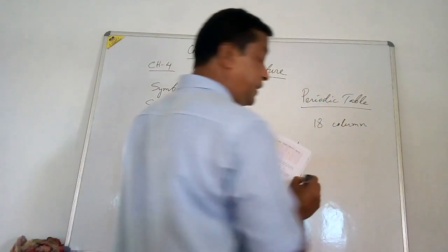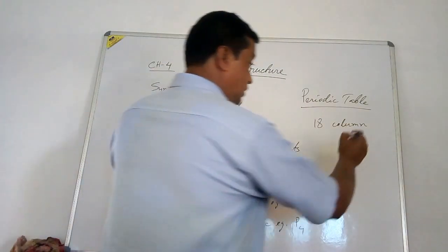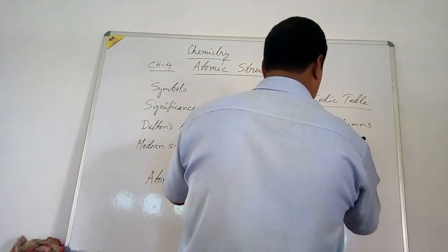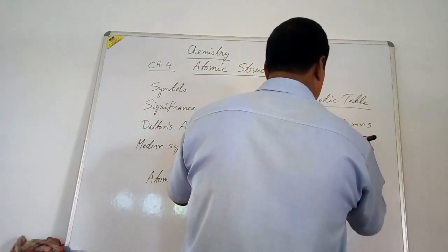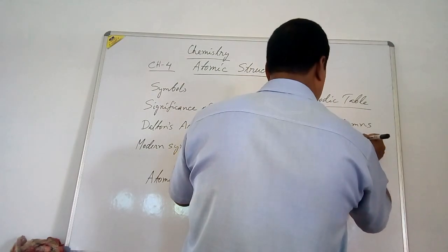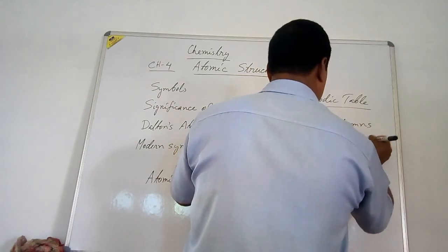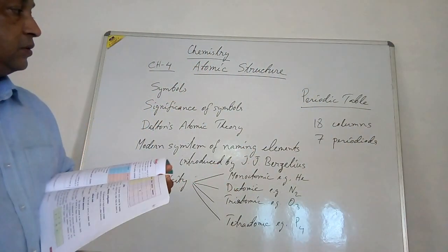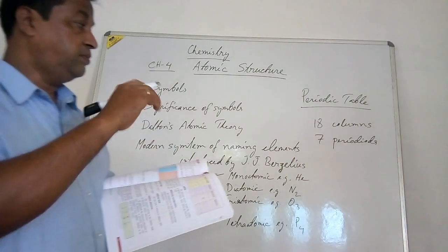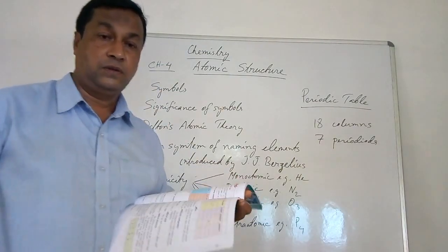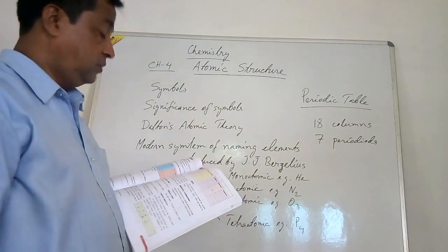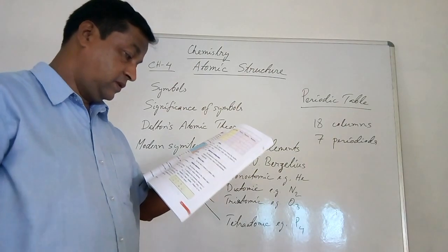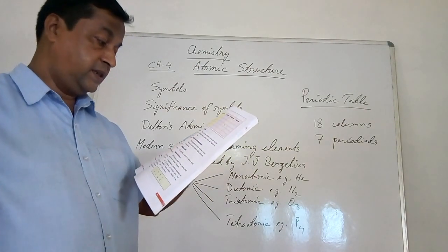In the periodic table, there are 18 vertical columns and 7 horizontal rows. The 18 columns are known as groups, and the 7 horizontal rows are known as periods.